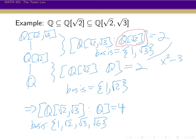This is basically how it works: if you have things broken up, adjoining one element at a time, this gives you a way to come up with the overall basis — you just take all the possible products together — if you know the bases for each individual extension.